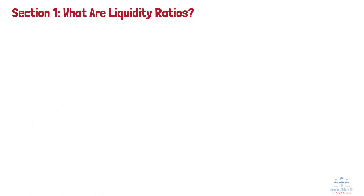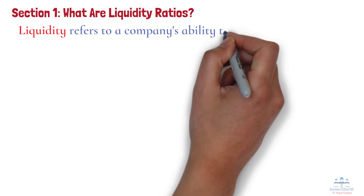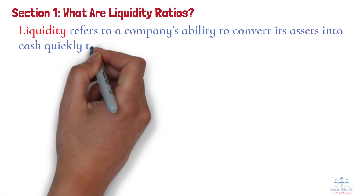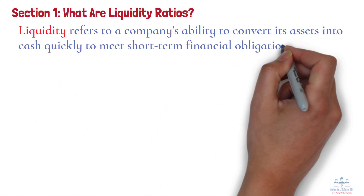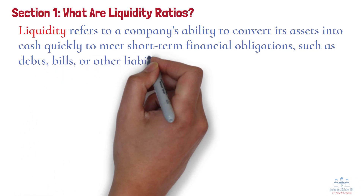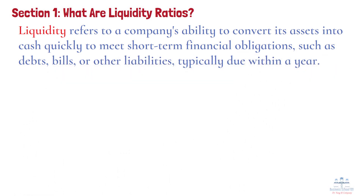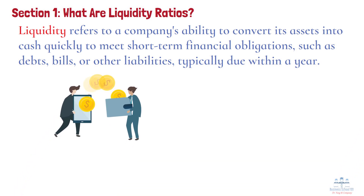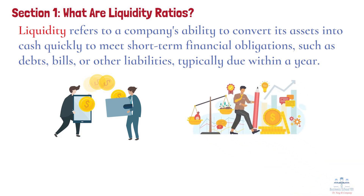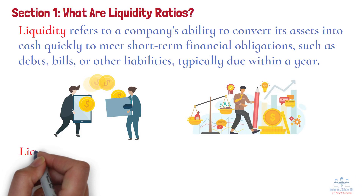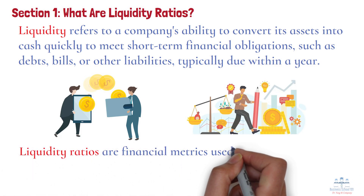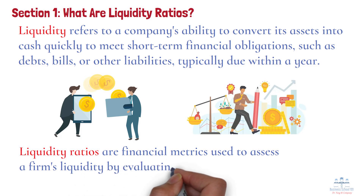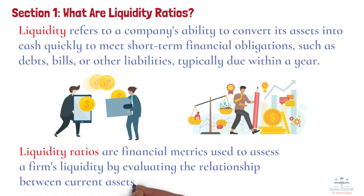What are liquidity ratios? Liquidity refers to a company's ability to convert its assets into cash quickly to meet short-term financial obligations, such as debts, bills, or other liabilities, typically due within a year. It measures how easily a business can access cash without requiring additional financing or selling long-term assets. Liquidity ratios are financial metrics used to assess a firm's liquidity by evaluating the relationship between current assets and liabilities.